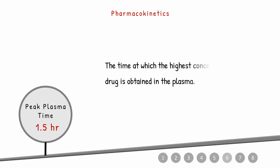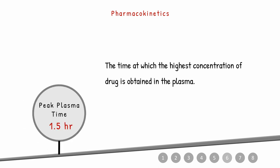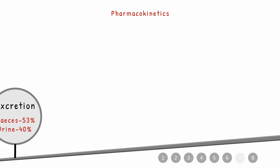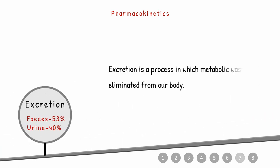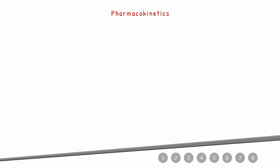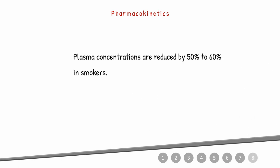Peak plasma time — the time at which maximum concentration is attained in plasma — is 1.5 hours for Riociguat. For excretion, 53% is eliminated via feces and 40% via urine. As an additional consideration, plasma concentrations of Riociguat are reduced by 50–60% in smokers.